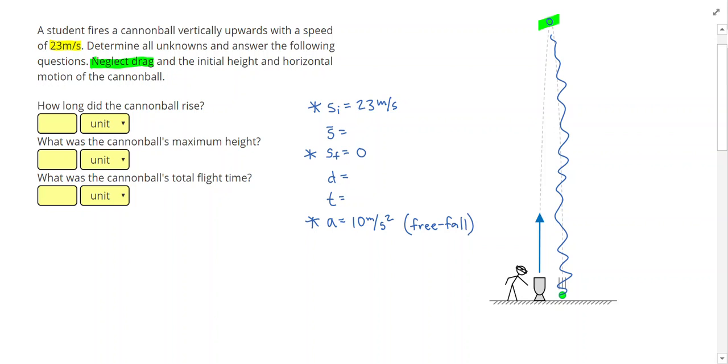So looking at this, I know I can go ahead and figure out my time using the definition of acceleration. So if I do my final speed minus my initial speed, and divide that by the acceleration, take the absolute value, that will give me a time of 23 minus 0 is 23, divided by 10, or 2.3 seconds.